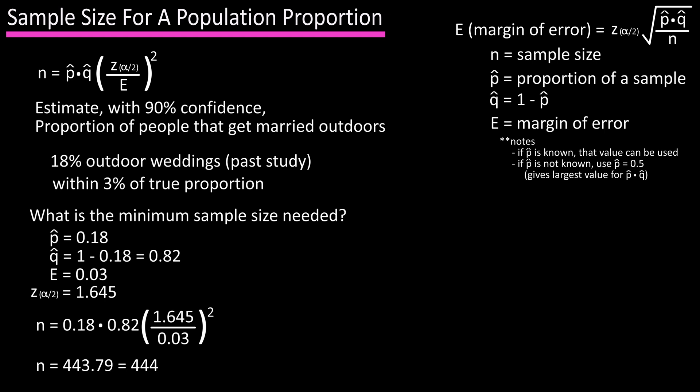Now let's say same question, but we're going to assume there was no previous study done. What's the minimum sample size needed? Using our formula, the values for p hat and q hat are going to change to 0.5 for each. Again, calculations give us 752 as the sample size.